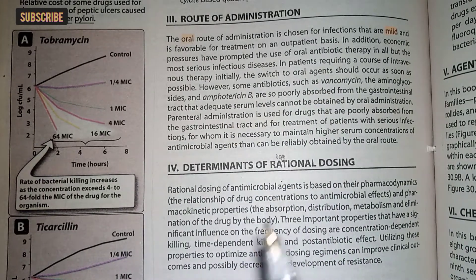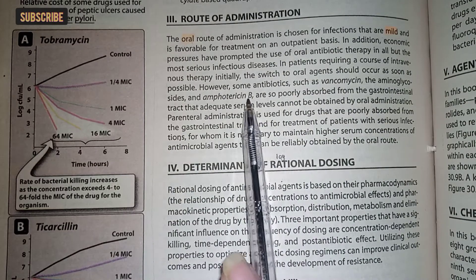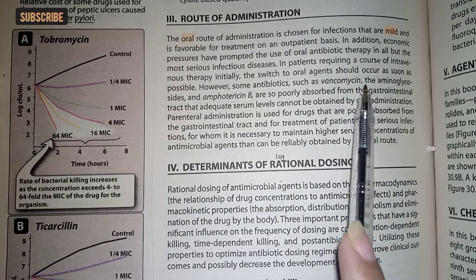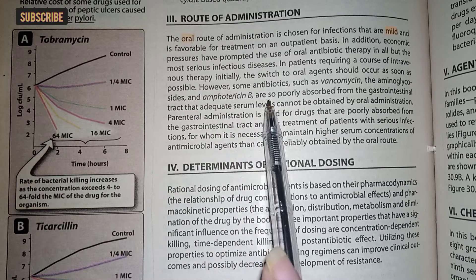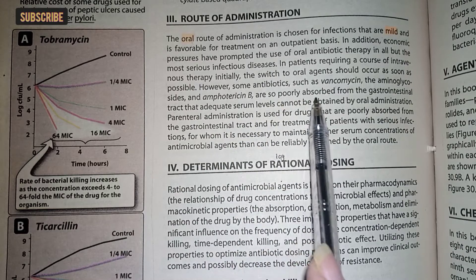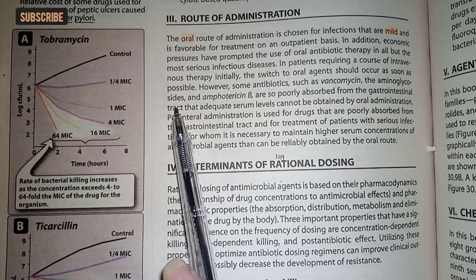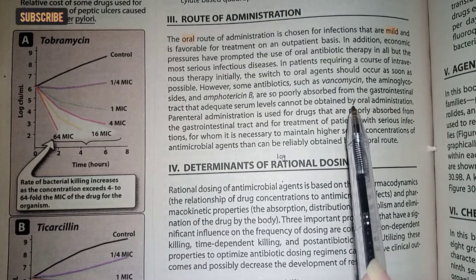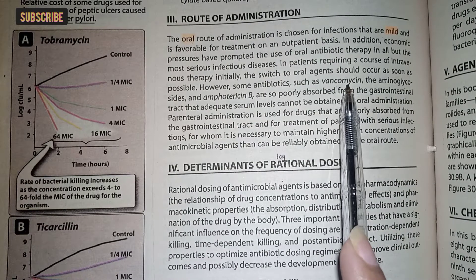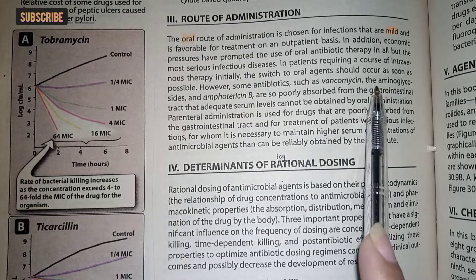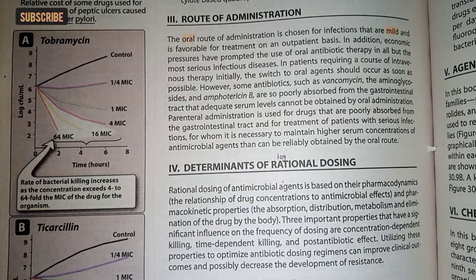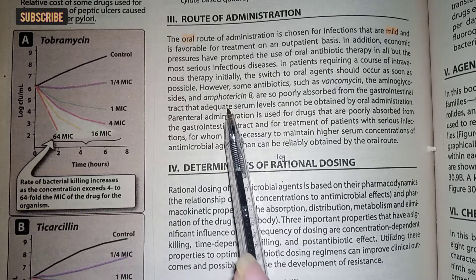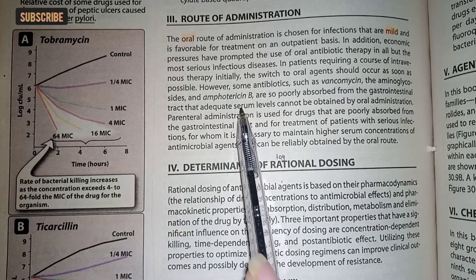اگر ہمارے پاس infection severe آ جاتا ہے، مطلب کہ ہمیں patient کو جلد از جلد treat کرنا پڑتا ہے، تو اس کے لیے ہم intramuscular route کو prefer کریں گے۔ لیکن کچھ ایسی antibiotics ہوتی ہیں جیسے کہ vancomycin، aminoglycosides اور amphotericin B — یہ drugs specifically poorly absorbed ہوتی ہیں from the gastrointestinal tract، تو اس وجہ سے ہم ان کو oral route سے نہیں دیں گے۔